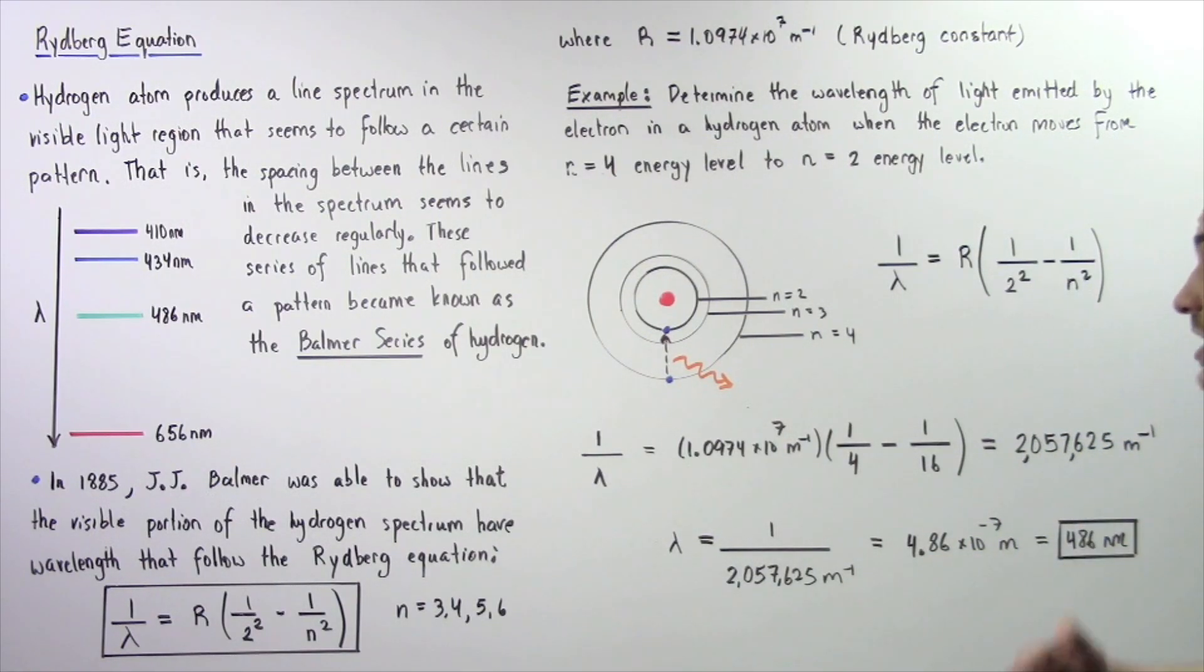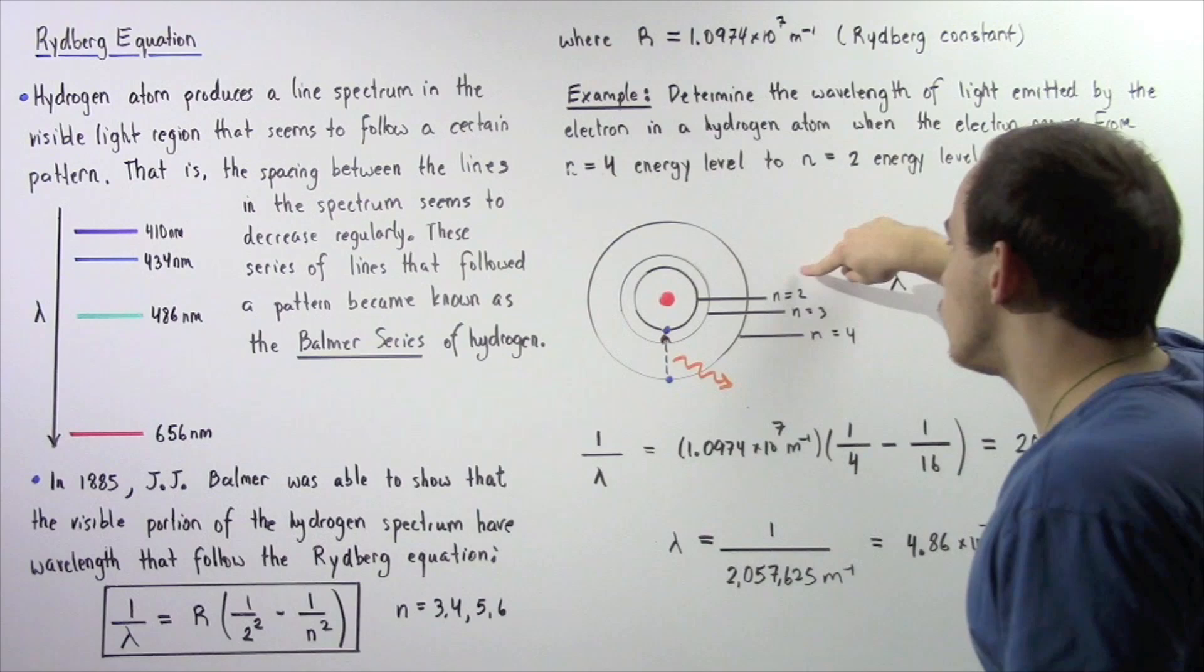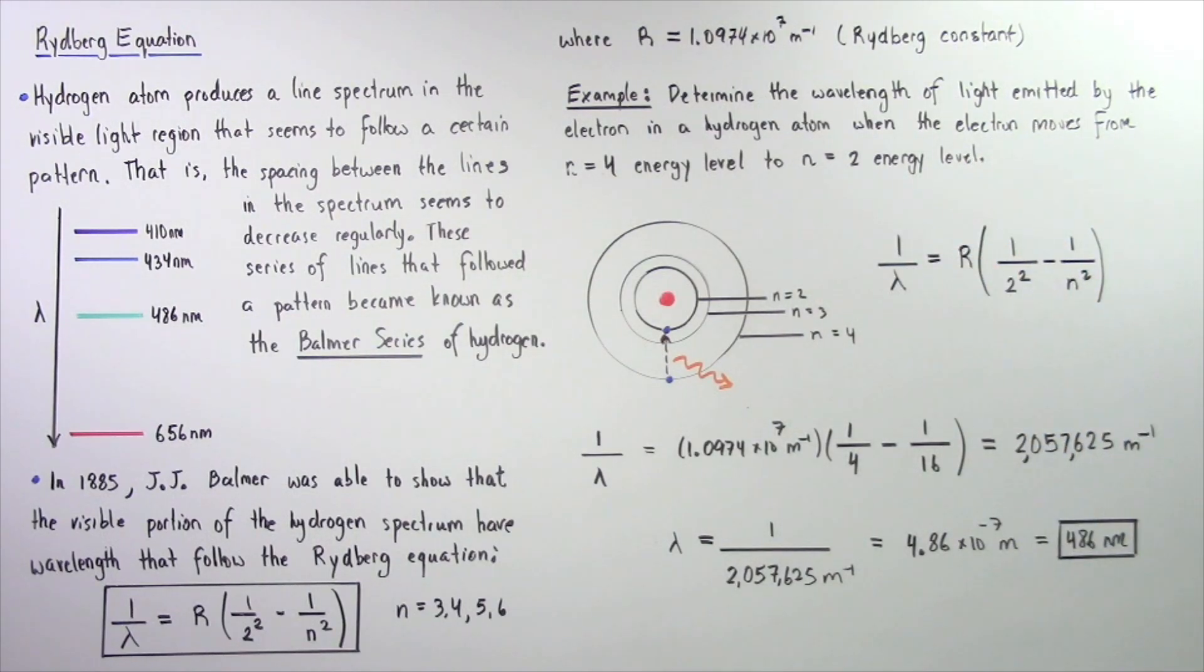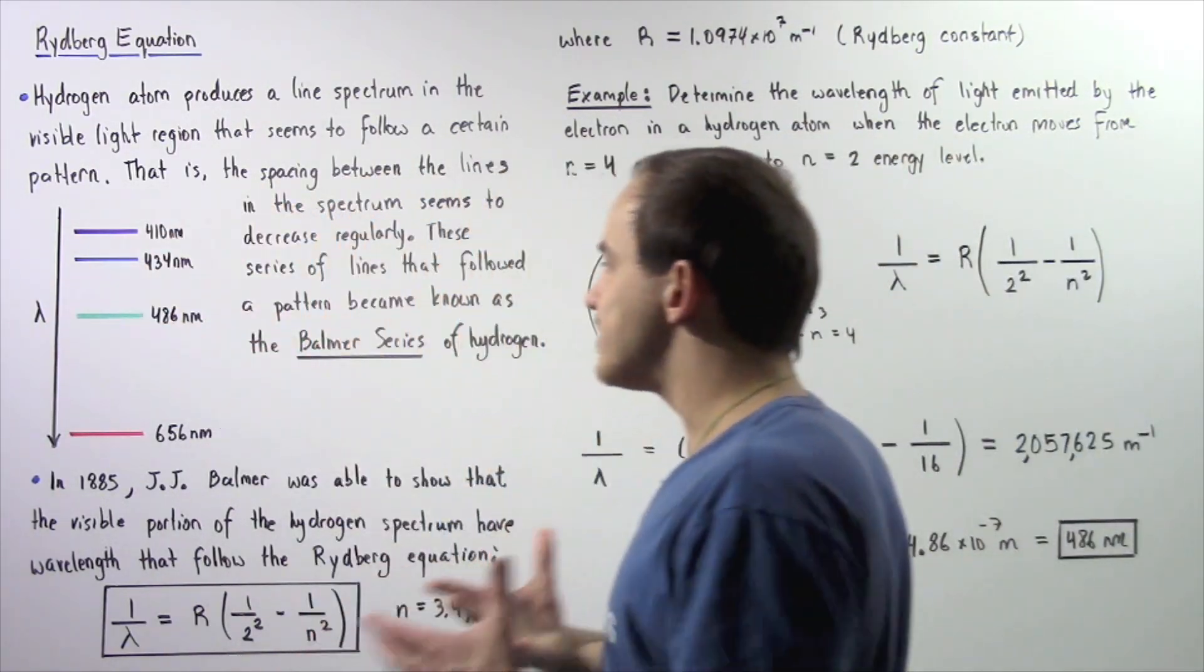So we see that the wavelength of our light produced when the electron jumps from n equals 4 to n equals 2, principal quantum number, the wavelength is equal to 486 nanometers. And that is equal to the following color.